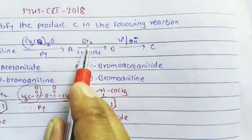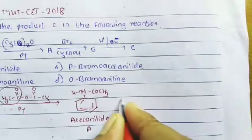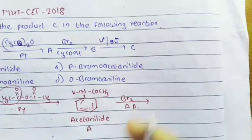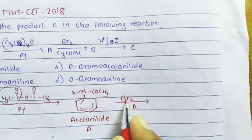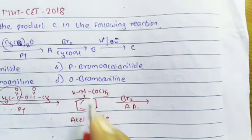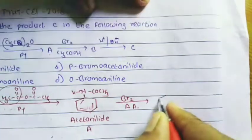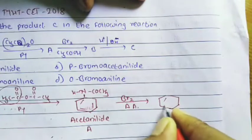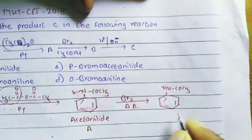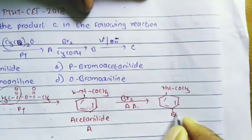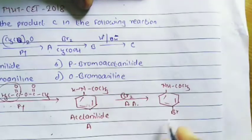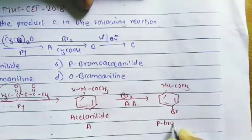Product A reacts with bromine in presence of acetic acid. The bromine group is added to the para position relative to the nitrogen group. This gives us para-bromoacetanilide, containing the NHCOCH3 group with bromine attached at the para position of the acetamide group. This is product B.